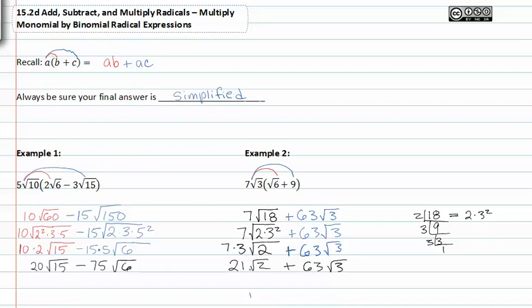Since my indexes match, I could look and see if these two terms could be added together. But since the values inside the radicals don't match, this is as far as I can go. And this is my final answer or final simplification.